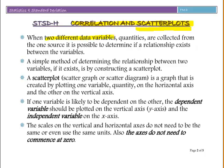When two different data variables or quantities are collected from one source, it's possible to determine if a relationship exists between the variables. A simple method of determining the relationship between two variables, if it exists, is by constructing a scatterplot. A scatterplot, also called a scatter graph or scatter diagram, is created by plotting one variable on the horizontal axis and the other on the vertical axis.